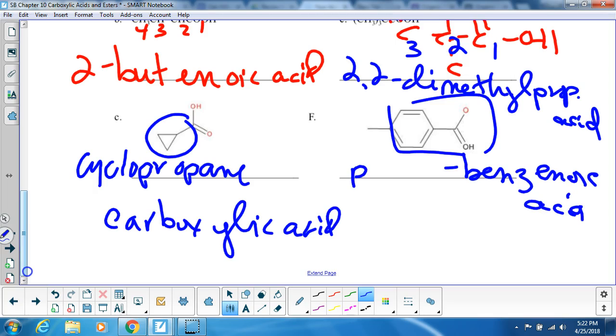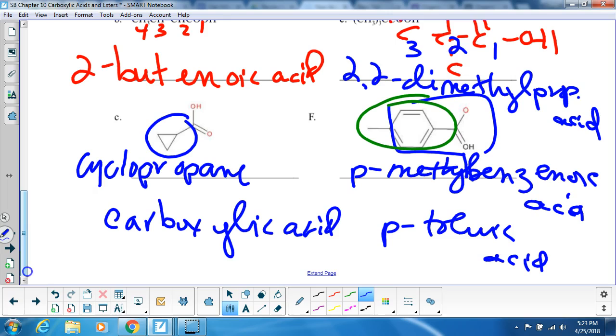and then across from it's a methyl group. Okay, now, if you see it maybe this way, there's your toluene again. So maybe you could say para-toluic acid, benzenoic acid, so there you go.